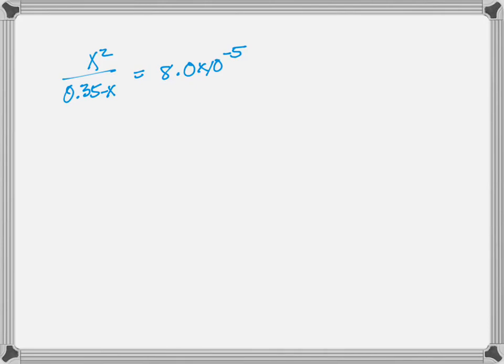First, in order to simplify our algebra, we'll assume that the minus x in the denominator is negligible. So then we can rewrite this without the minus x in the denominator, and that makes it much easier to solve for x.